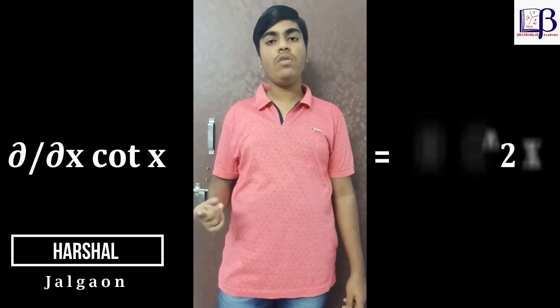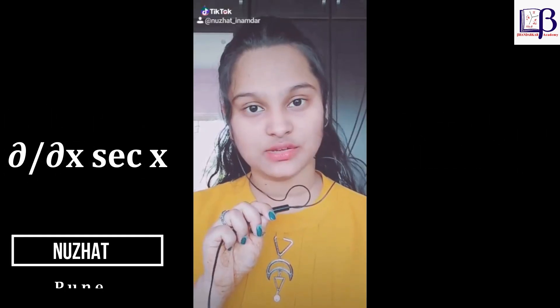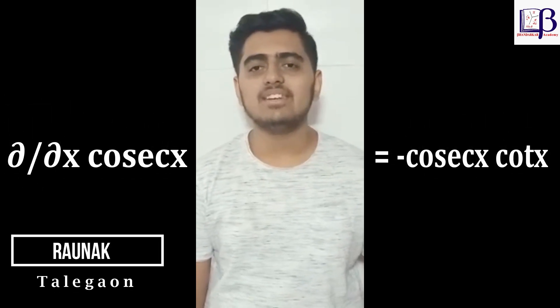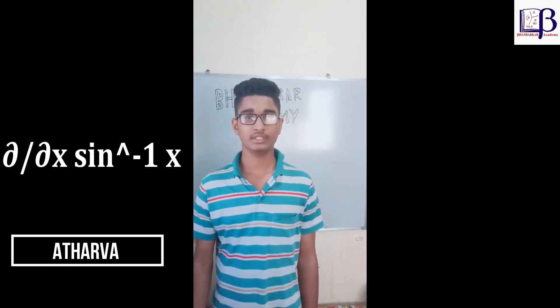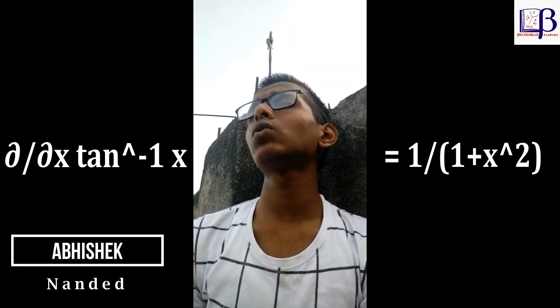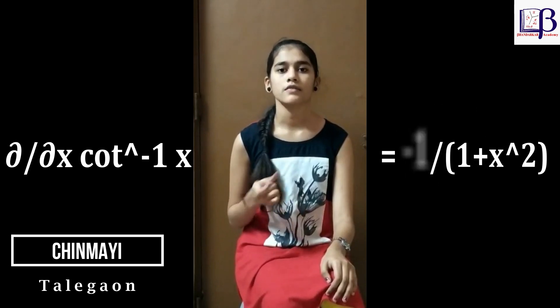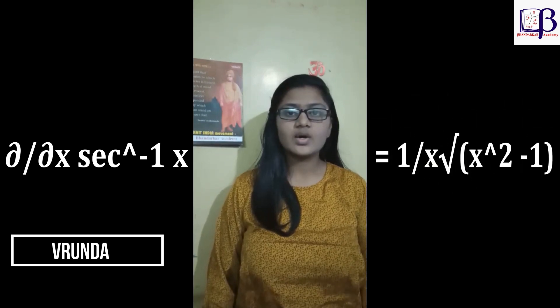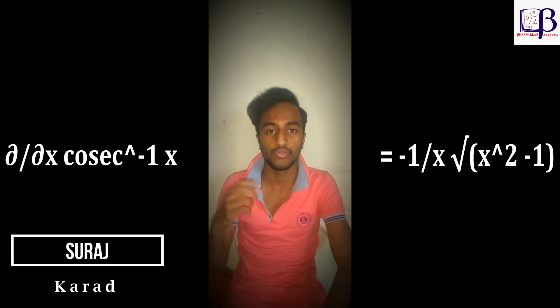d by dx of cosec x is equal to minus cosec x cot x. d by dx of sec x is equal to sec x tan x. d by dx of sin inverse x is equal to 1 upon root of 1 minus x squared. d by dx of cos inverse x is equal to minus 1 upon root of 1 minus x squared. d by dx of tan inverse x is equal to 1 upon 1 plus x squared. d by dx of cot inverse x is equal to minus 1 upon 1 plus x squared. d by dx of sec inverse x is equal to 1 upon x root of x squared minus 1. d by dx of cosec inverse x is equal to minus 1 upon x root of x squared minus 1.